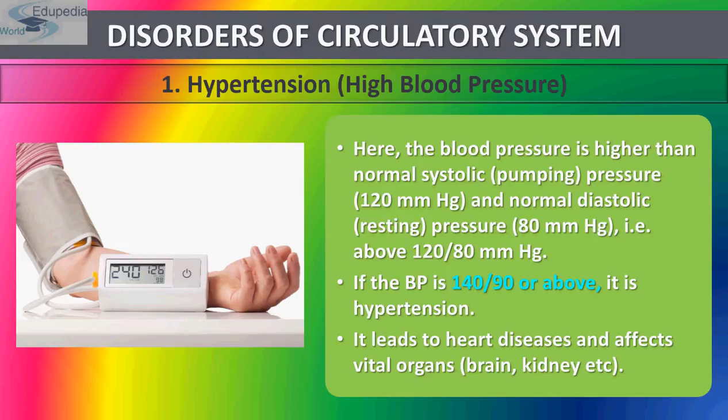Hypertension can also cause nephritis — that is kidney-related problems — as well as stroke or paralysis. It is often called a silent killer, as a person may suffer from it for several years without any symptoms. Causes of hypertension include old age, arteriosclerosis, atherosclerosis — meaning hardening of the arteries and loss of elasticity — and vasoconstriction.